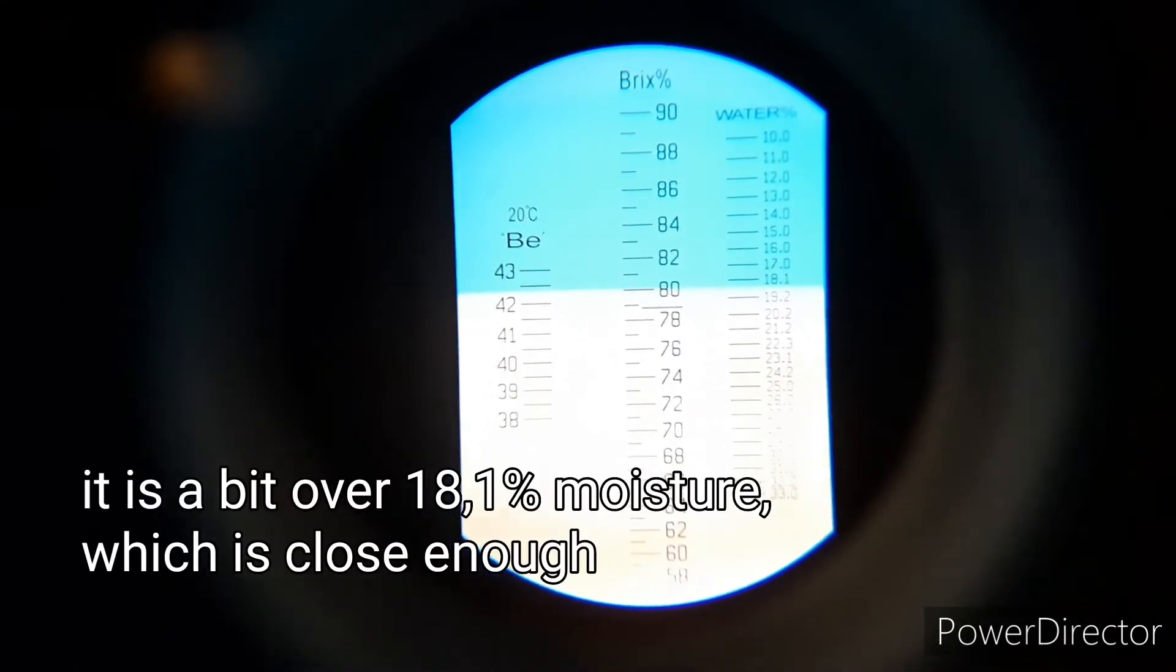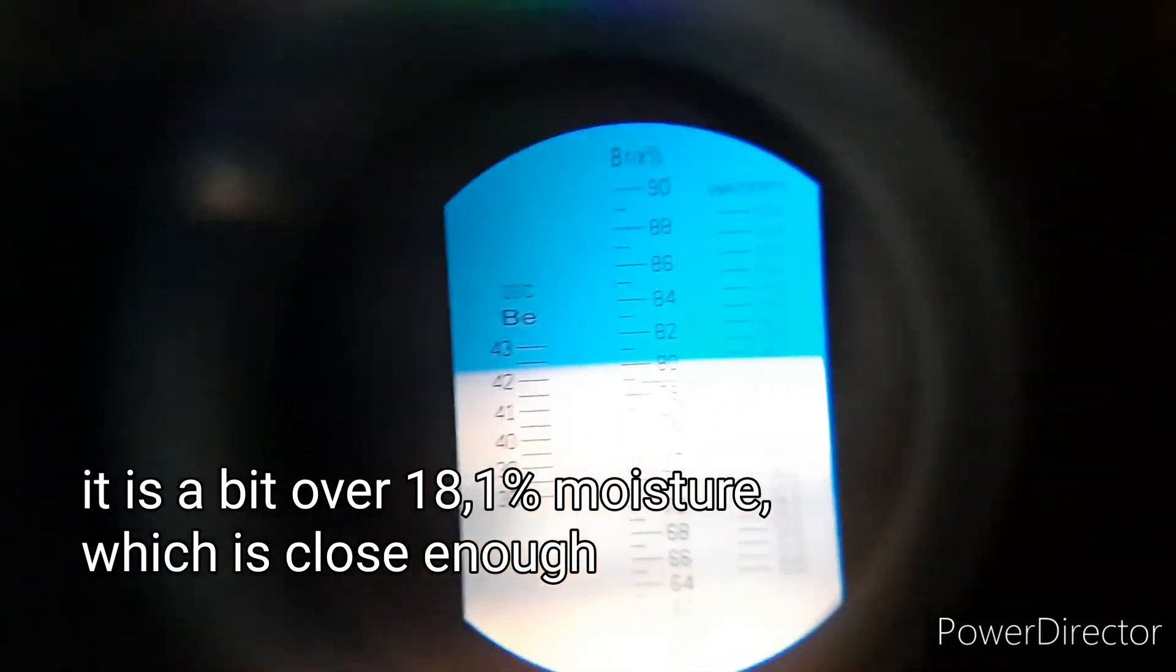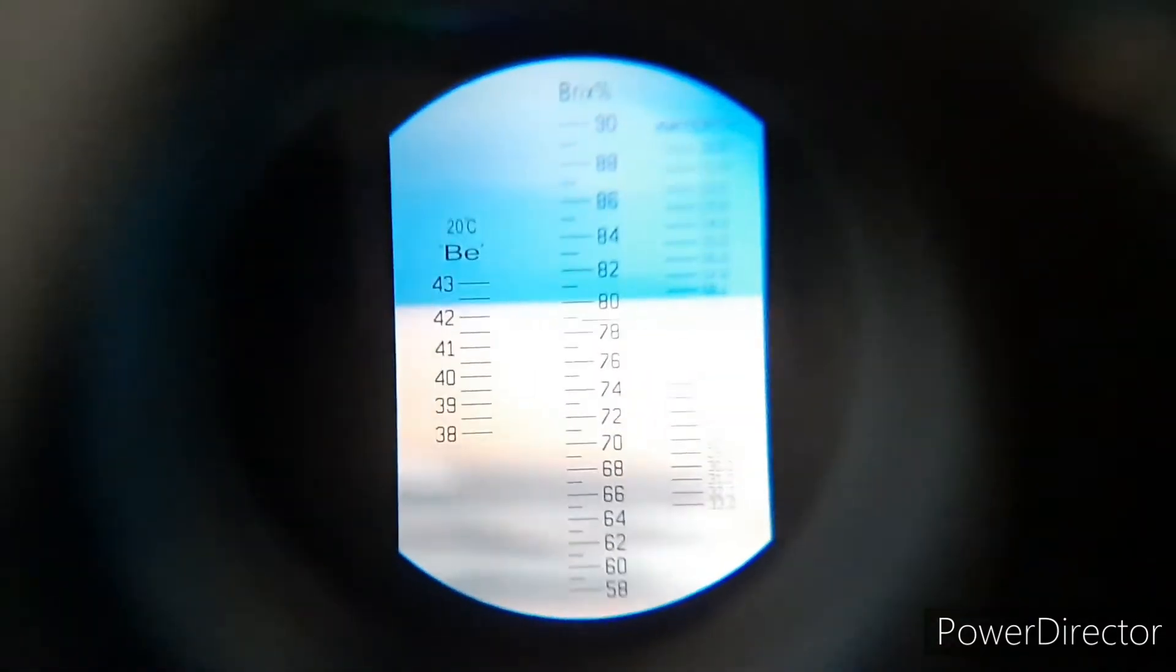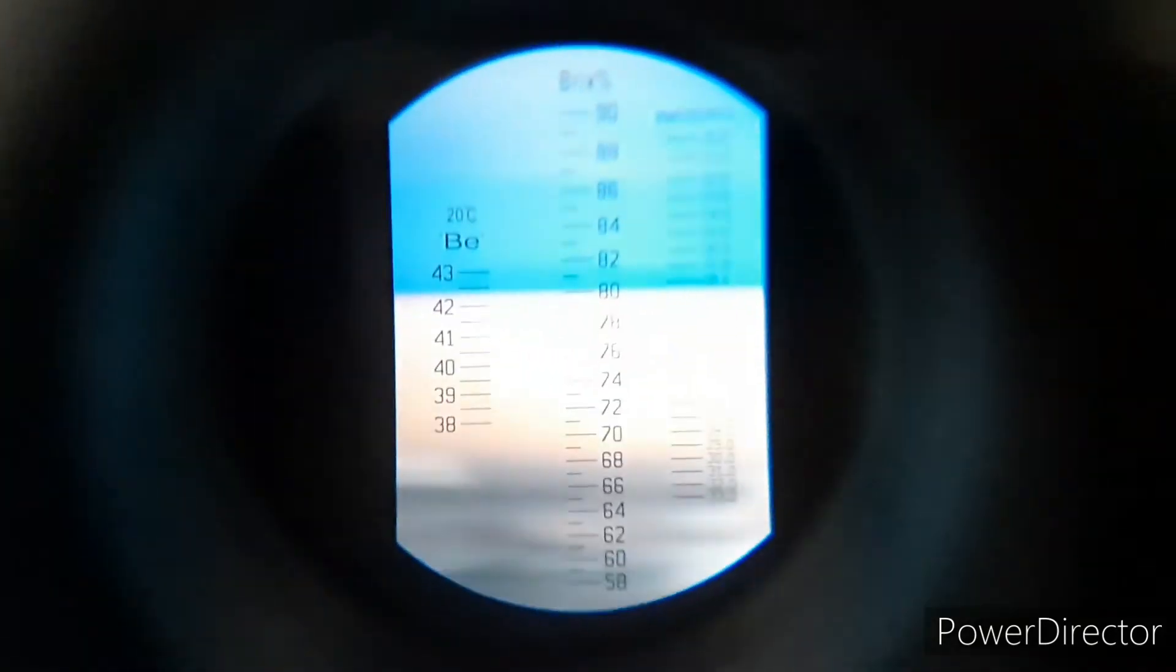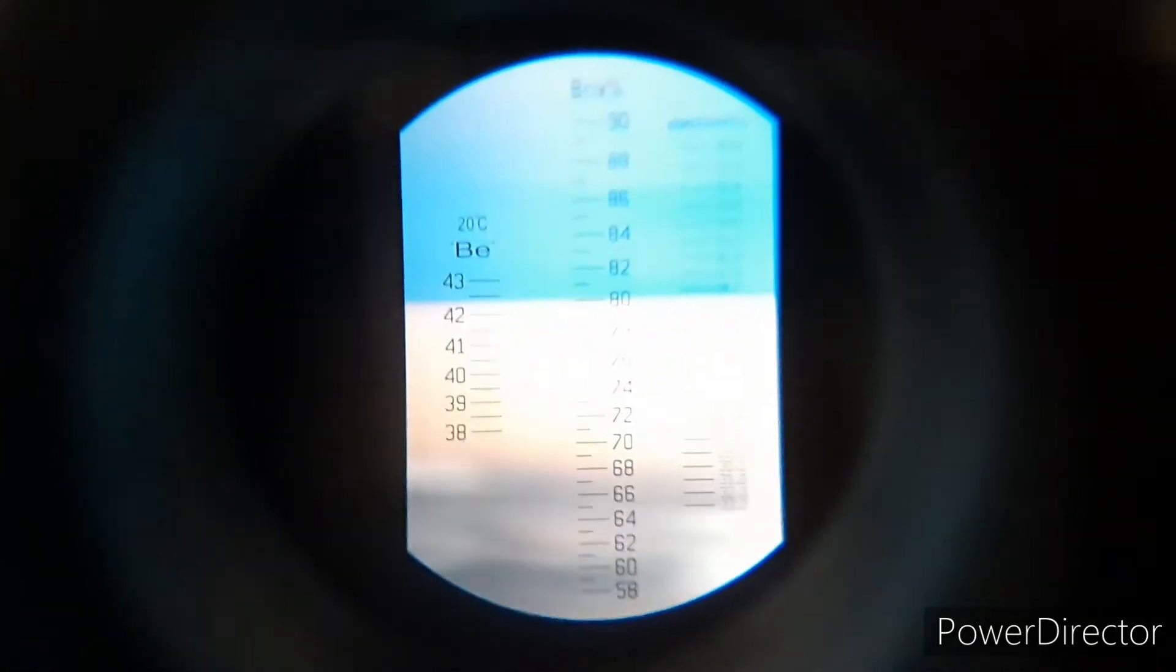There it is, now it's calibrated the correct way. You can test your honey so you know the moisture content. Honey needs to be under 20 percent, except for heather honey that can be a bit higher.